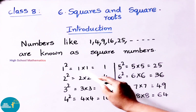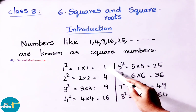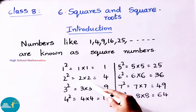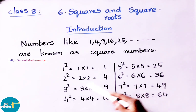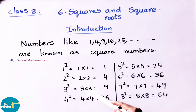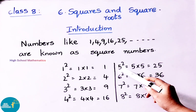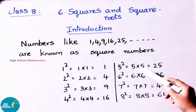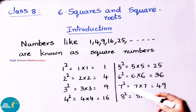1 square means 1 multiplied 2 times, so 1 into 1 is 1. 2 square means 2 multiplied 2 times, so 2 into 2 is 4. Next, 3 square means 3 into 3, that is 9. 4 square means 4 into 4, that is 16. 5 square means 5 into 5, that is 25. 6 square means 6 into 6, that is 36. 7 square means 7 into 7, that is 49.